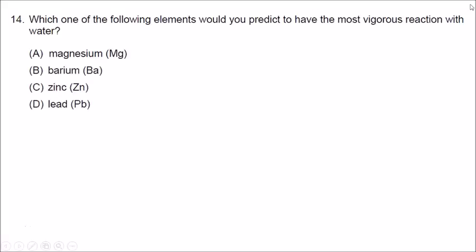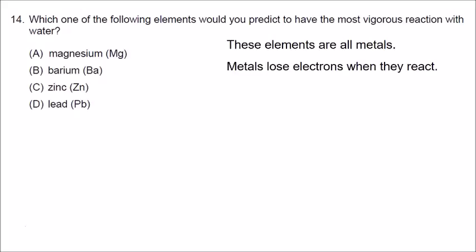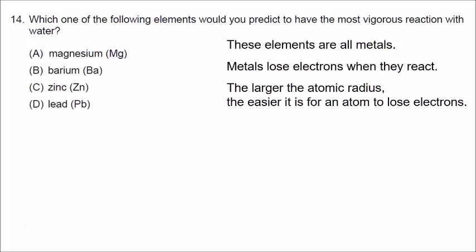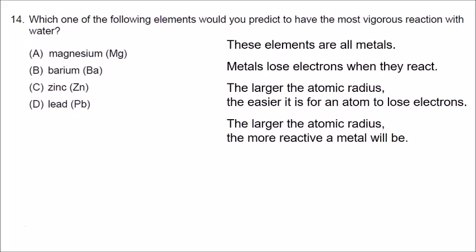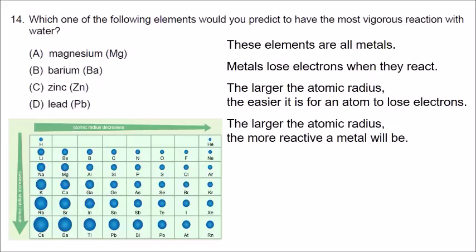Number fourteen: which element has the most vigorous reaction with water? All four elements are metals, and metals lose electrons when they react. The larger the atomic radius, the easier it is for an atom to lose electrons. We want the largest atomic radius, found in the lower-left corner near cesium. The correct answer is B — barium. The larger the atomic radius, the more reactive the metal.